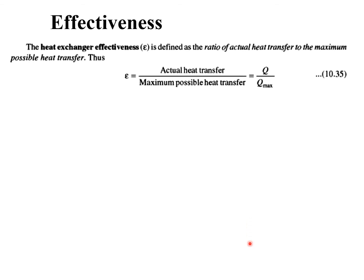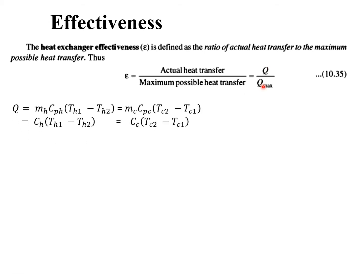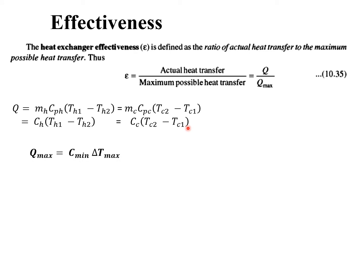Now, what is effectiveness? Effectiveness is the ratio of actual heat transfer to maximum possible heat transfer, given by q over q_max. Here q is already known: q equals m_h·c_ph·(T_h1 − T_h2), which also equals m_c·c_pc·(T_c2 − T_c1). Therefore q equals C_h·(T_h1 − T_h2) and also equals C_c·(T_c2 − T_c1).